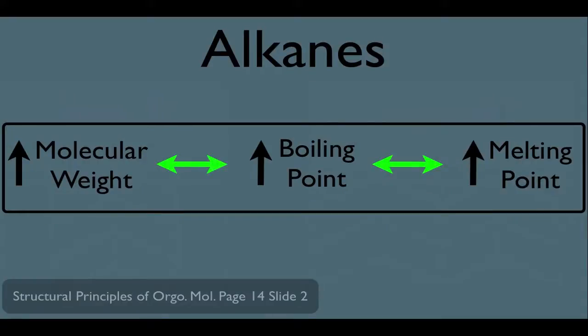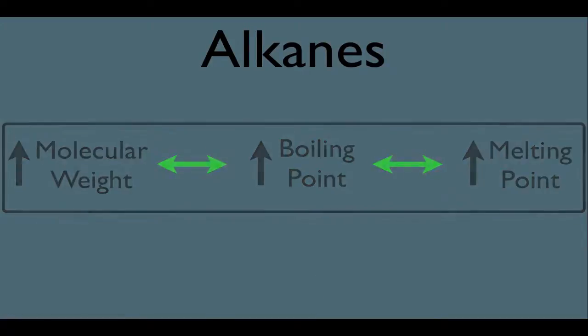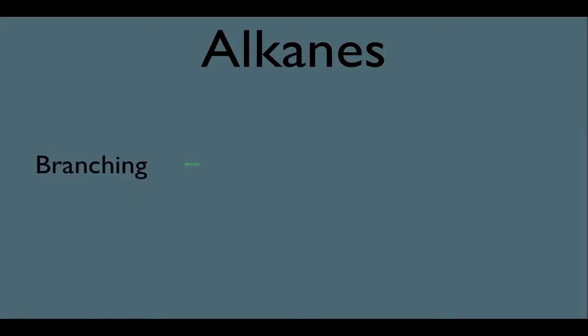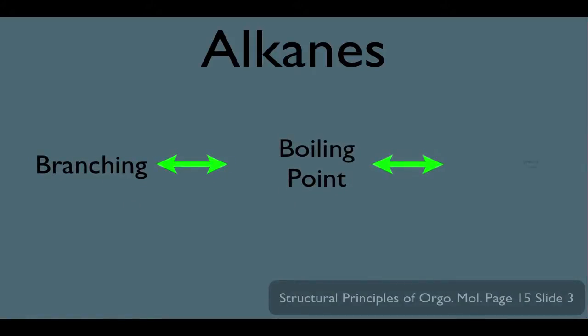That's why an increased molecular weight corresponds to a higher boiling point. And what we saw can also be applied to melting point — the higher the molecular weight, the higher the melting point for the same reasons. The more intermolecular forces you have, the higher temperature it takes to melt something. But there's another relationship between the structure of an alkane and its boiling point that I'd like you to know: branching. More branching causes a lower boiling point, but increases the melting point. We want to remember this trend.